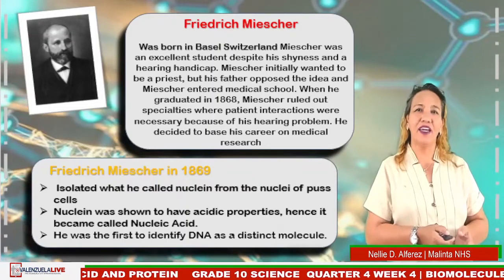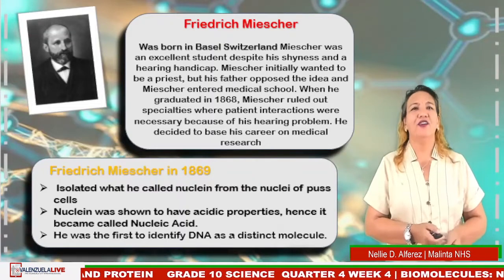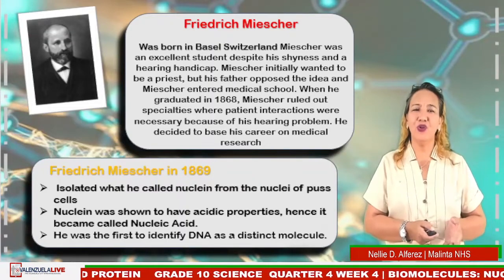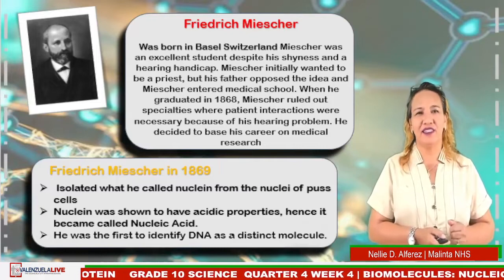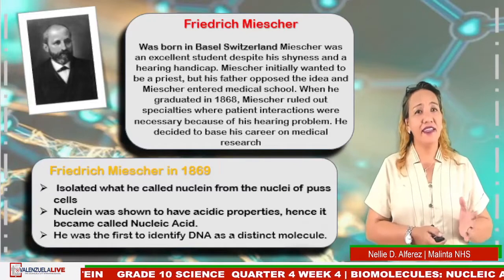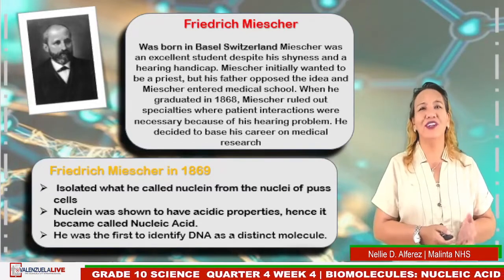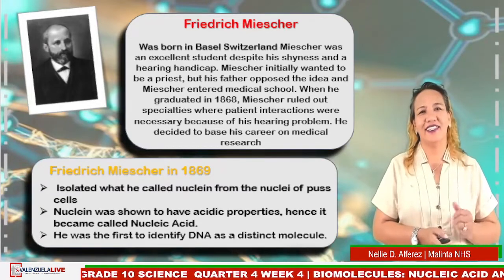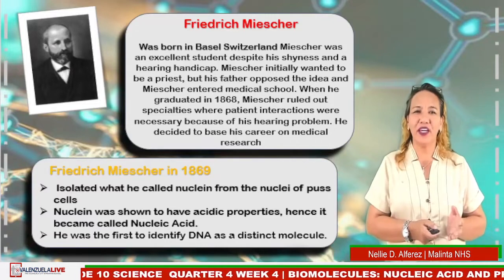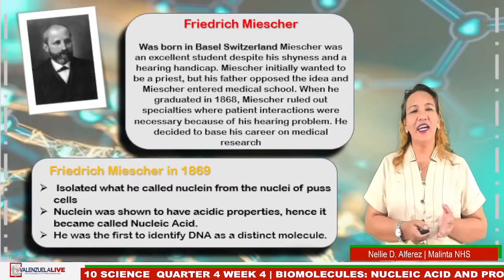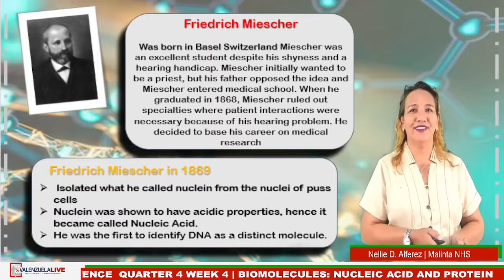Through his research, Miescher isolated what he called nuclein from the nuclei of pus cells. The substance was shown to have acidic properties, hence it became known as nucleic acid. He was the first to identify DNA as a distinct molecule.